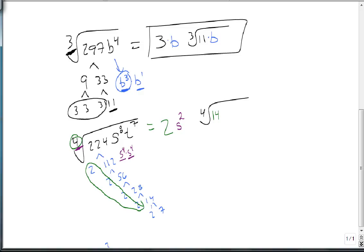T to the 7th, though, becomes t to the 4th times t to the 3rd. So a single t gets out, but it leaves 3 inside. And here is our final answer.